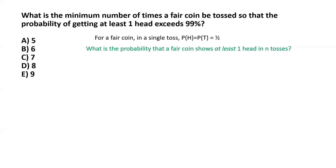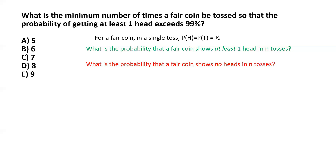So in this case, what's the complementary event? The complementary event — that's what I'm writing in red — is basically the fair coin showing no heads in n tosses. If we find the probability of the complementary event, we can simply find the probability of the event by subtracting the complementary probability from one.